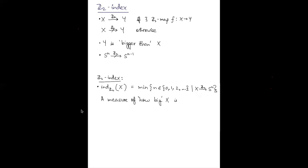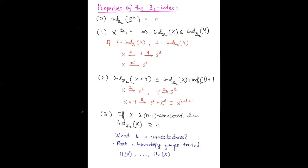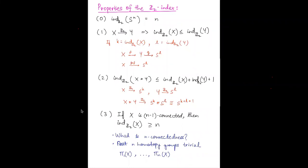The Z2 index of a space X gives some measure of how big X is. It's defined as the minimum n such that there is a Z2 map going from X to S^n. The first property: index of S^n equals n. By the Borsuk-Ulam theorem, the index of S^n cannot be less than n because there's no Z2 map to a smaller sphere, and the identity map from S^n to itself gives a Z2 map, so the index must be exactly n. The second property: if there's a Z2 map from X to Y, then the index of Y must be at least as large.